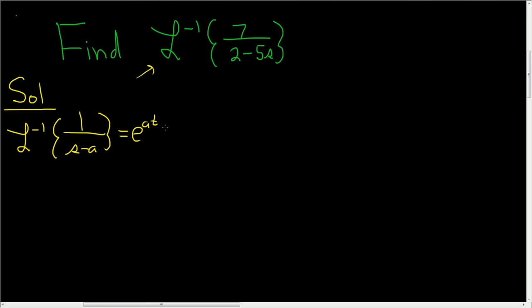So we basically have to take what we have and make it match this formula somehow. So I'll go ahead and write it down again. The inverse Laplace of, and let me go ahead and take the 7 out. You can do that because it's linear. And then here we have 2 minus 5s.